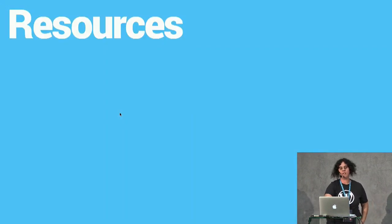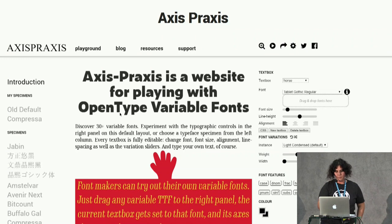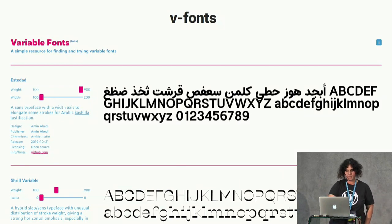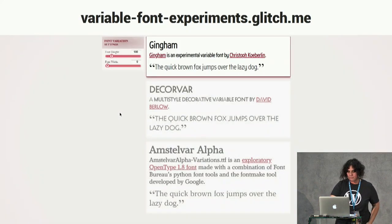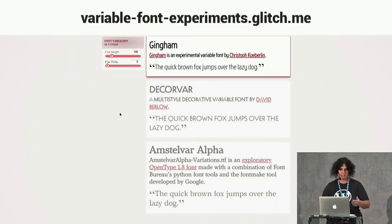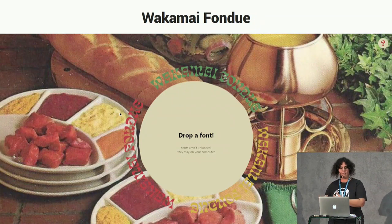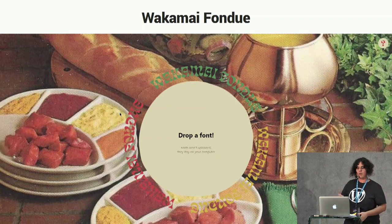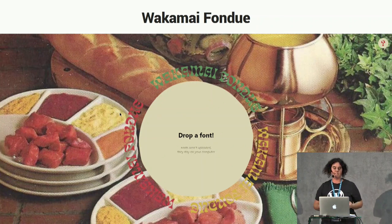Here you have some resources for finding and testing variable fonts. Axis Practice is for finding and testing. Also View Fonts. Or Play Type Detail — where you can write your custom text. And another resource lets you just drop a font file and get information about what axes are designed by the font designer, how you can declare the CSS, and even export the CSS to use that font.